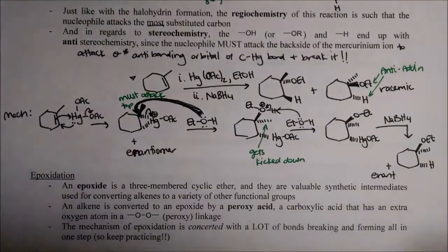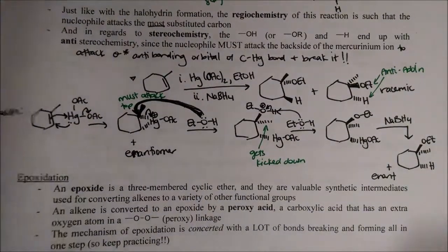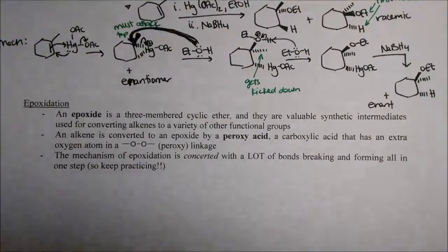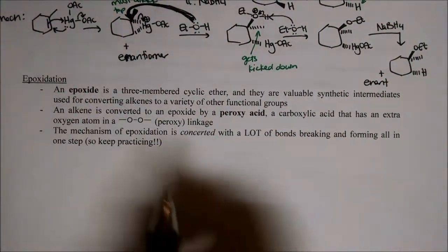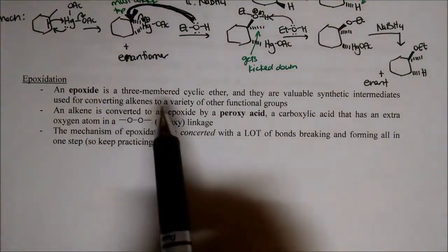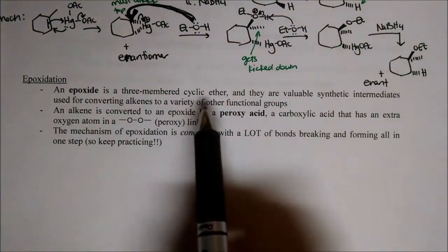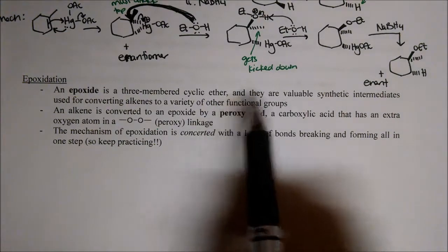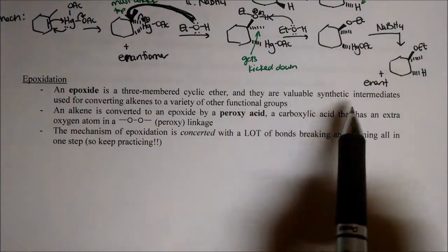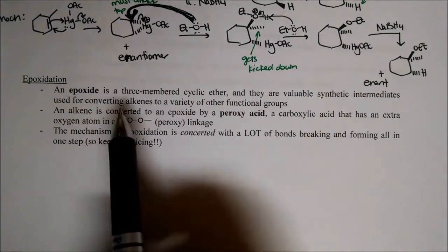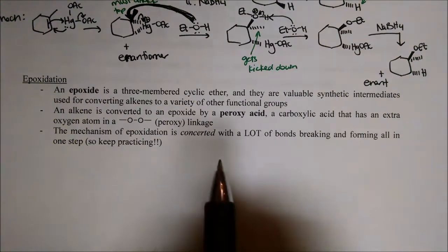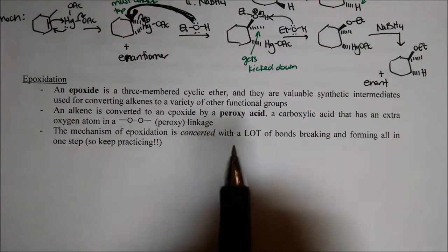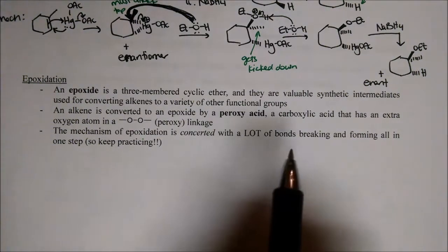Alright, on to epoxidations. An epoxide — you guys haven't seen these before. An epoxide is a three-membered cyclic ether, and they're valuable synthetic intermediates. They're often used for converting alkenes to a variety of other functional groups, including alcohols and other ethers.